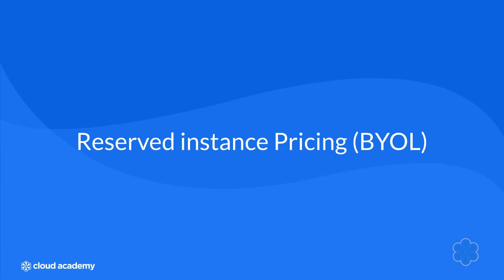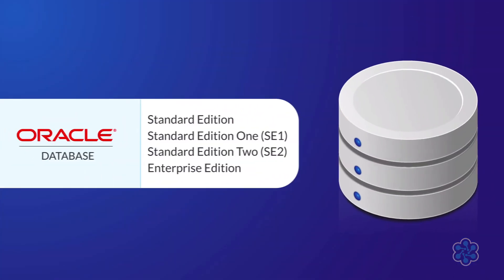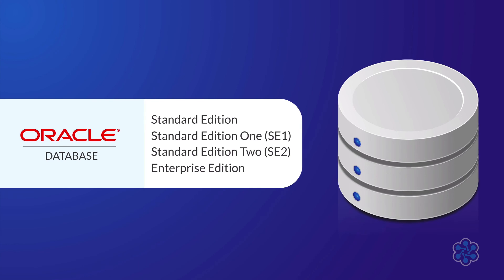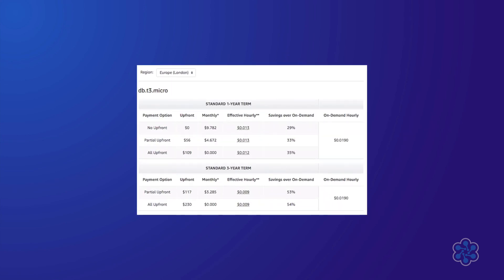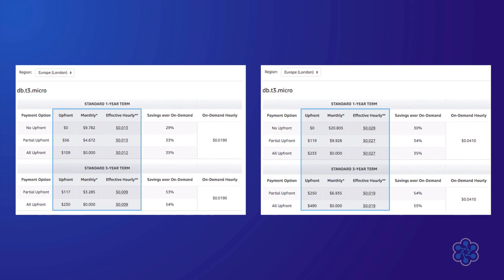Reserved instance pricing with Bring Your Own License follows the same principles covered earlier when discussing Bring Your Own License for on-demand instances. At the time of writing this course, it's only available for Oracle, and the same prerequisites apply, in addition to the same four editions being available: Standard Edition, Standard Edition 1, Standard Edition 2, and Enterprise Edition. As you are only paying for the compute instances, there is no variation in prices between the different Oracle editions. The following table shows the reserved instance pricing for single AZ deployment using Oracle with Bring Your Own License for the T3 Micro instance. Comparing this to standard reserved instance pricing where the license is included shows a substantial difference. The pricing for multi-AZ will be double the prices shown here.